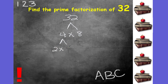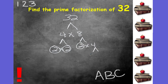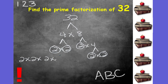Four factors into 2 times 2. Once we have the prime numbers, we circle them. Let's work on the 8 branch — I can do 2 times 4. 2 is prime, 4 is not, so I factor the 4 and I get 2 times 2, which are both prime. So the prime factorization listed from least to greatest — they're all 2's, and there are five 2's — so the prime factorization would be 2 times 2 times 2 times 2 times 2. This is the prime factorization for 32.